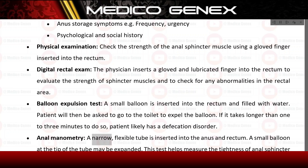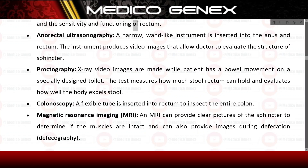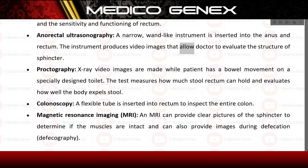Anal manometry: a narrow flexible tube is inserted into the anus and rectum, with a small balloon at the tip that may be expanded, helping measure the tightness of the anal sphincter and the sensitivity and functioning of the rectum. Anorectal ultrasonography: a narrow, wand-like instrument is inserted into the anus and rectum, producing video images that allow the doctor to evaluate the structure of the sphincter.